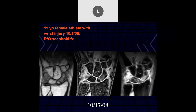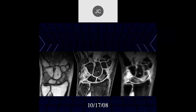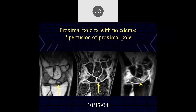We have a 19-year-old female athlete with a wrist injury in October, rule out scaphoid fracture. There's a lot of edema in the scaphoid and triquetrum. There's likely a fracture at the proximal pole of the scaphoid — these are greater arc bony injuries. One thing discussed in the literature: when you have proximal pole fractures and don't see edema proximal to the fracture, it's concerning that there's no vascularity, increasing the patient's risk for AVN developing in that proximal pole.